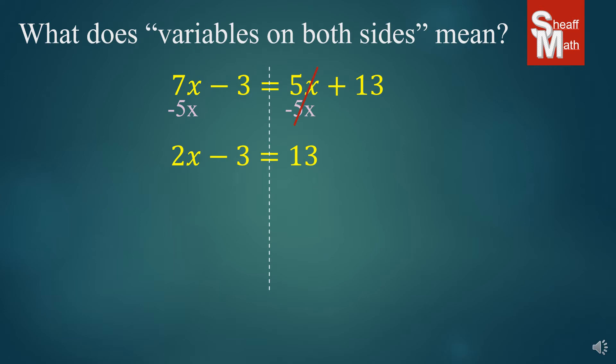Now we have a two-step equation. We're going to add 3 on both sides giving us 2x equals 16. We're going to undo that multiplying 2 by dividing 2, so we can cancel that out and we are left with x equals 8. There it is.